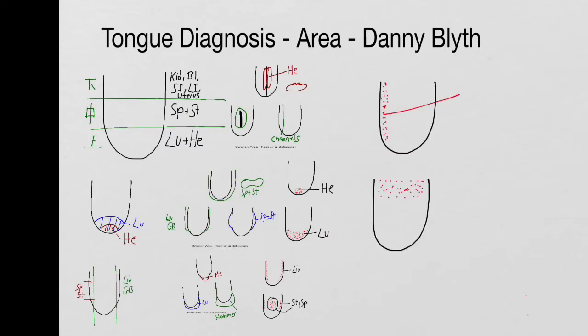Points or spots that are one-sided - the gallbladder if it's on the right, liver on the left - usually tells you there's a lingering pathogenic factor. And points or spots on the lower third of the tongue just tells you that there's heat in one of those organs: the intestines, the bladder, or the uterus.